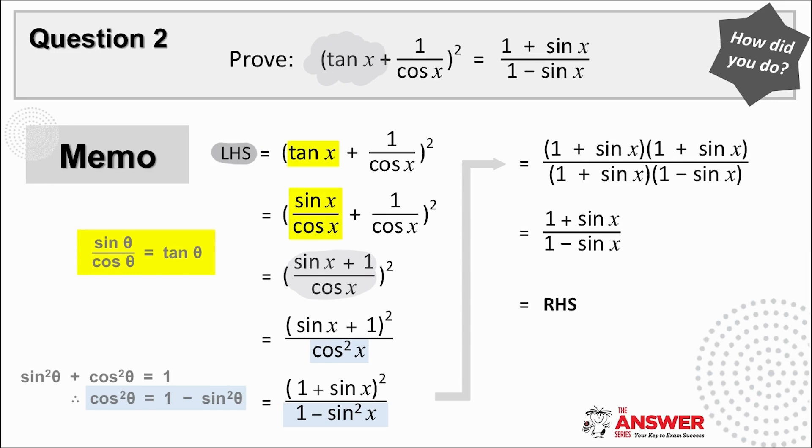Now because the whole fraction is being squared and there's not much we can do inside the bracket, in this next step write it a little differently by applying the square to the numerator and denominator. We now have the numerator in terms of sine, so getting closer here to the right hand side, but the denominator is in terms of cos. Is there any way we can change this?